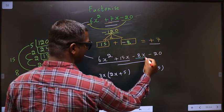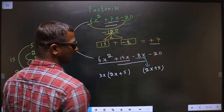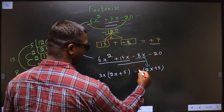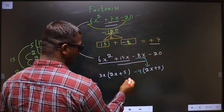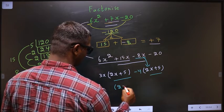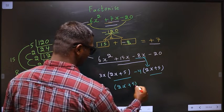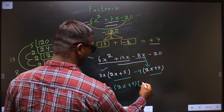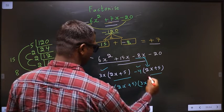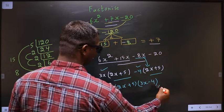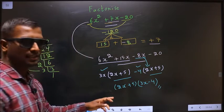Now from -8x - 20, taking out the common factor gives -4(2x + 5). Now take out (2x + 5) common. So here I get 3x and here I get -4. Therefore (3x - 4)(2x + 5). This is the answer.